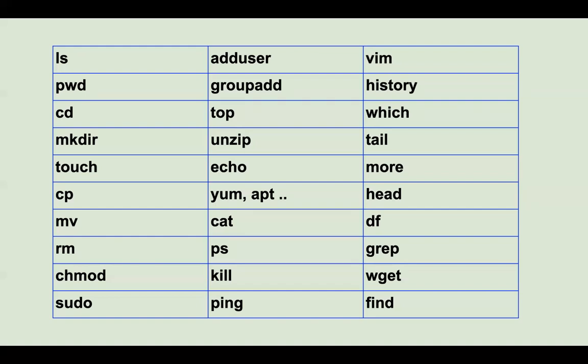Then you have 'yum' and 'apt' — these are package managers. Package managers are used to install any package on your Linux machine. On Windows you download software from the internet and install it locally, but in Linux environments you use package managers. For example, on Ubuntu the default package manager is 'apt', and it manages frequently used packages.